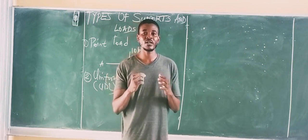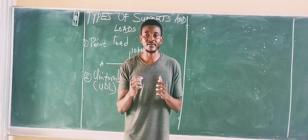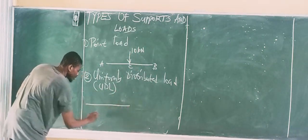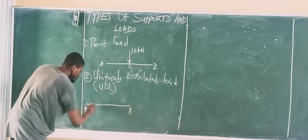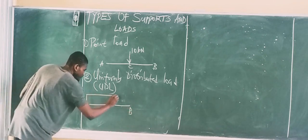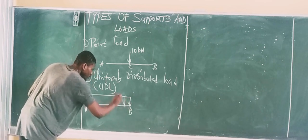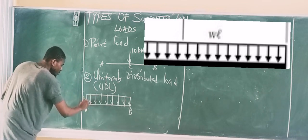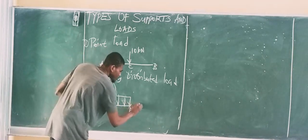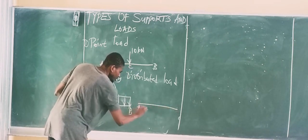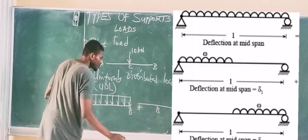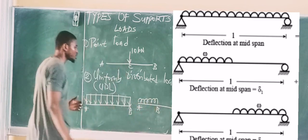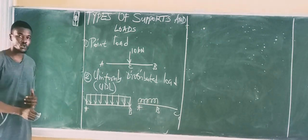The UDL can appear on a beam from A to B in a certain form, or it can appear between points B and C on the beam in another form. It can also take a third form between points A and C. These are three ways in which a UDL can look like. The load intensity is usually measured in N per meter.